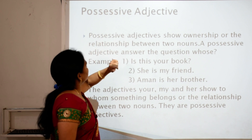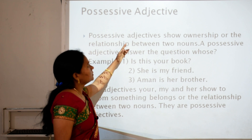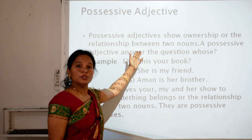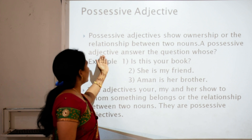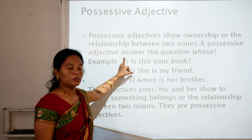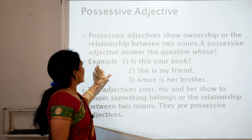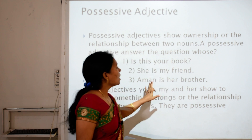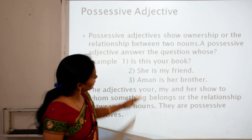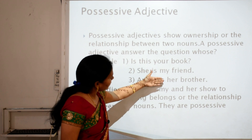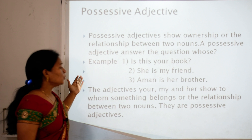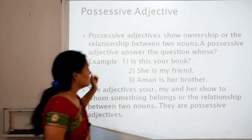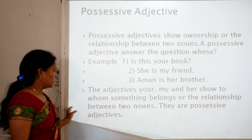Possessive adjectives show ownership or the relationship between two nouns. A possessive adjective answers the question 'whose?' For example: 'Is this your book?' — 'She is my friend.' — 'Amani is her brother.' You can see that your, my, and her show to whom something belongs or the relationship between two nouns — they are possessive adjectives.